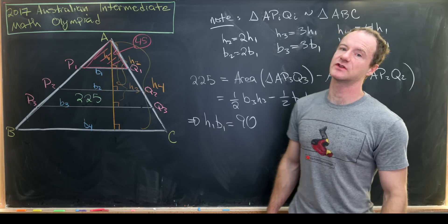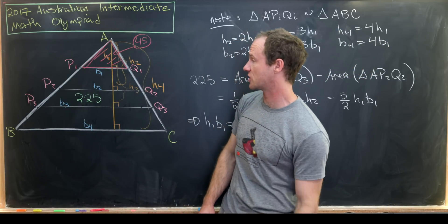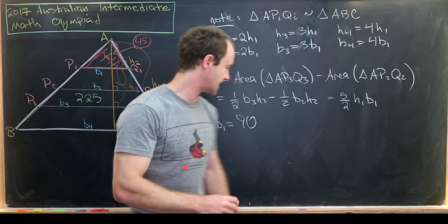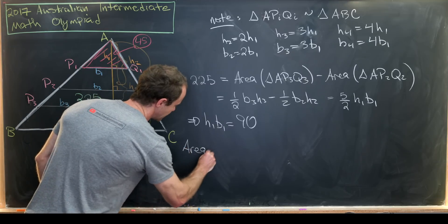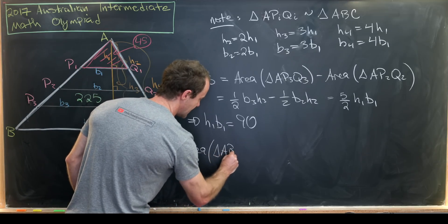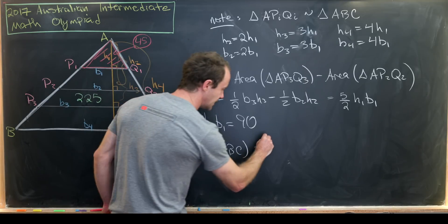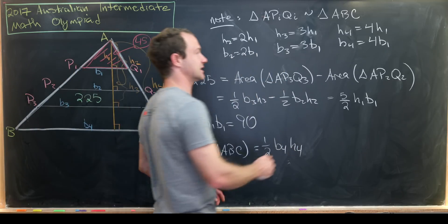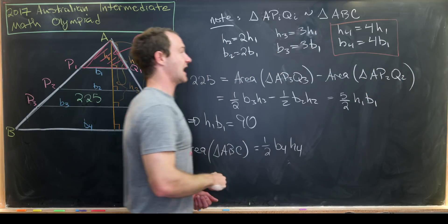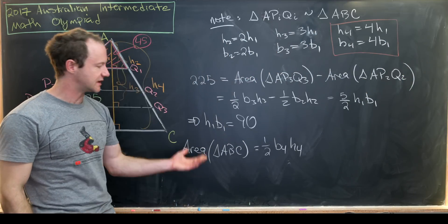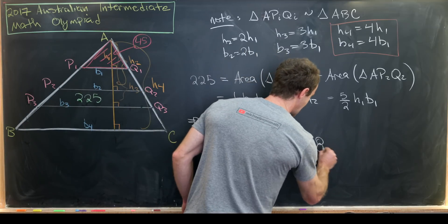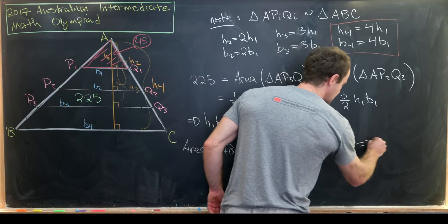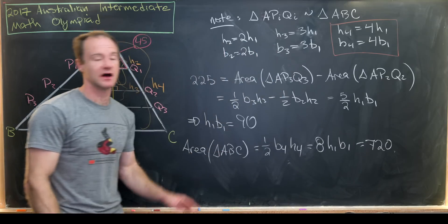And then we can use the similarity of the triangles, which we discussed over here, to find the area of the entire triangle. So based off of our notation, the area of the whole triangle will be 1 half B4 times H4. So area of the entire triangle, triangle ABC, which recall that was our final goal, should be equal to 1 half B4 times H4. But our similarity condition once again tells us that that is 4 times 4 times H1 times B1. 4 times 4 is clearly equal to 16 over 2. That gives us 8 H1 times B1. But we determined that H1 times B1 was 90. So in the end, we get 720 for the area of this entire triangle.